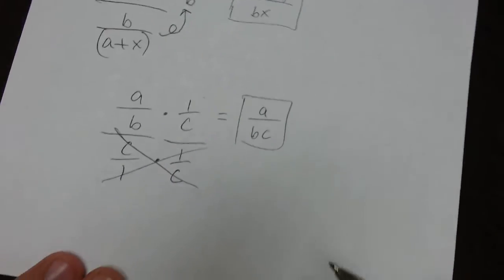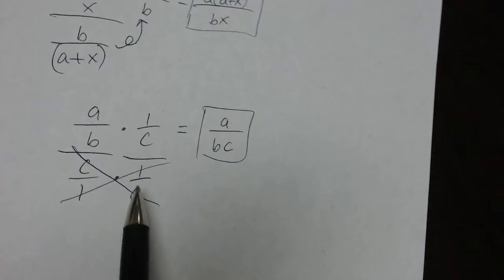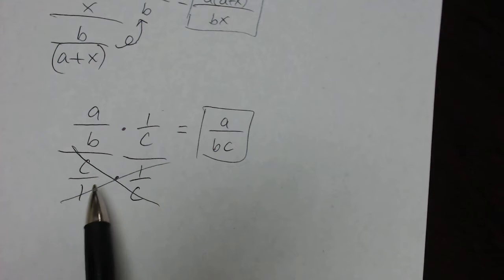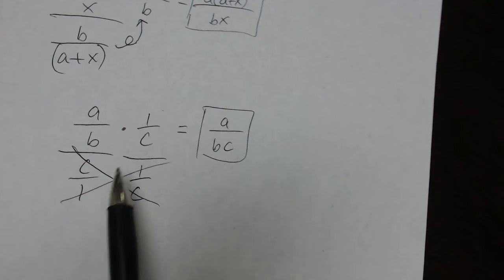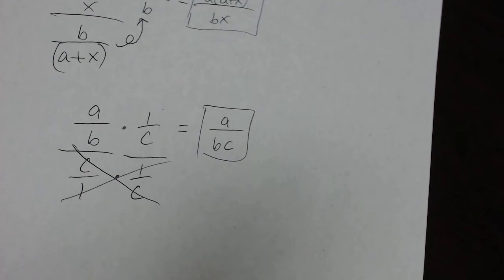So, another way to do it is, if you're having trouble with the loop-de-loop, or remembering to invert and multiply, you can multiply both the numerator and the denominator by the inverse of the denominator. And that's algebraically okay, because we're essentially just multiplying by a value of 1.